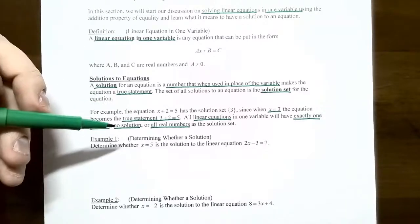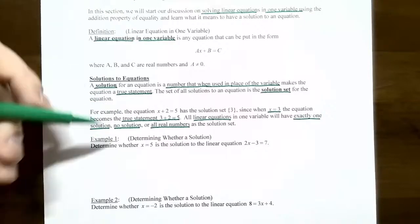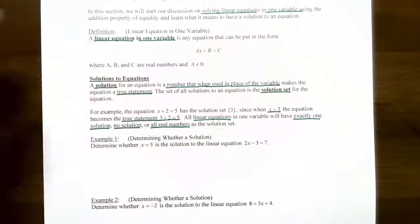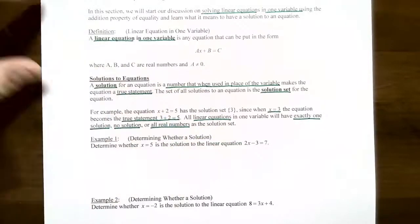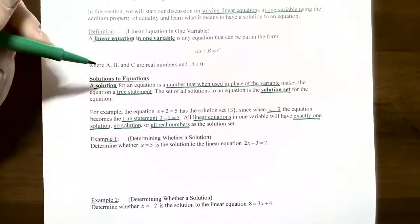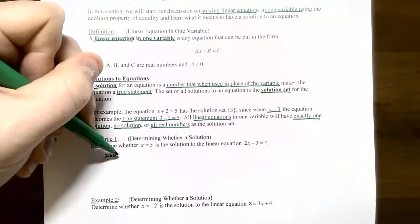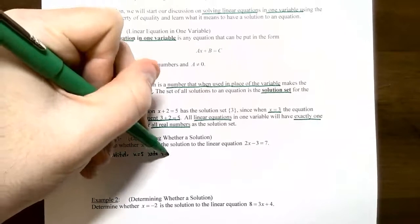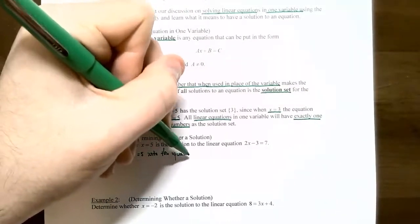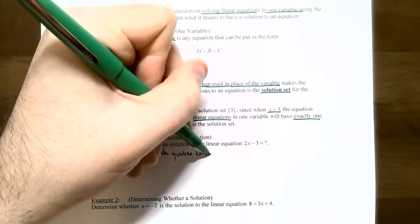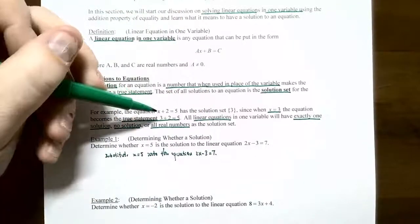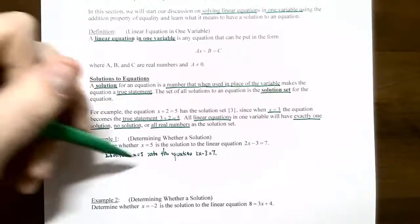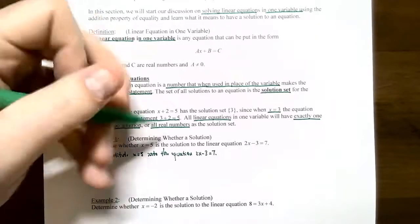Example one: determining whether a solution satisfies the equation. Determine whether X equals 5 is a solution to the linear equation 2X minus 3 equals 7. Notice that X is raised to the first power, so that's why it's a linear equation. To check whether it's a solution or not, substitute X equals 5 into the equation. Just like we did with X plus 2 equals 5, we replace X with the solution, and it should make a true statement.